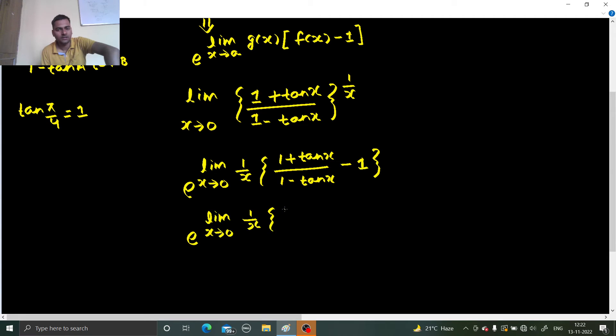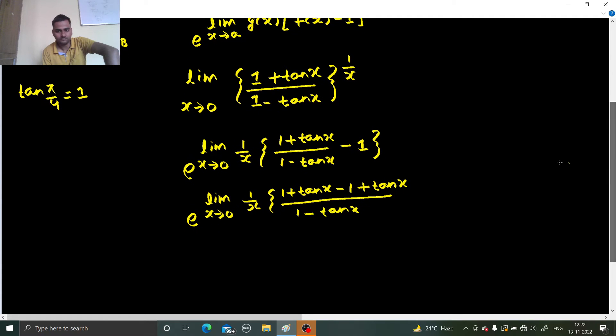1/x times [(1 + tan x)/(1 - tan x) - 1]. So this will be e power limit x tending to 0, 1 will get cancelled, you are going to get 2 tan x divided by 1 minus tan x, and this 1/x is also there.